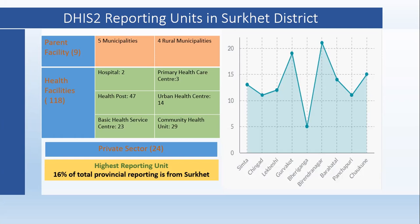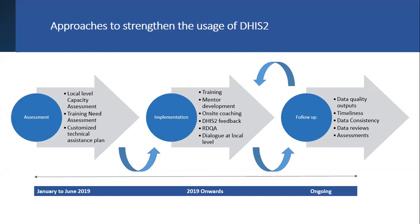Looking at overall reporting units in Surkhet district, the majority of the reporting unit is from Surkhet, contributing around 16% of total provincial reporting. SSBH conducted different approaches for DHIS2 usage: first, a local-level capacity assessment was done, training needs were assessed, and on the basis of this assessment a customized technical assistance plan was prepared. Then a capacity building plan was implemented, and based on data quality outputs — timeliness, data consistency, completeness — the local body was supported with implementation. This assessment process ran from January to June 2016, with implementation ongoing from 2019.